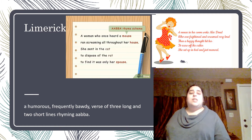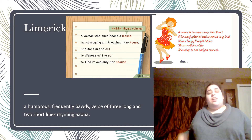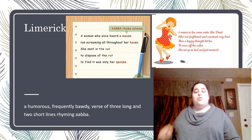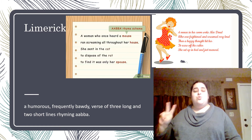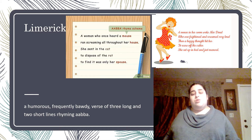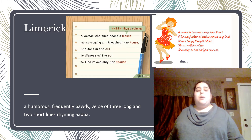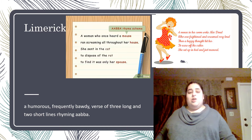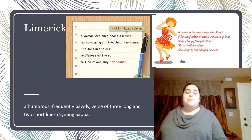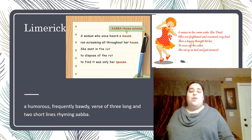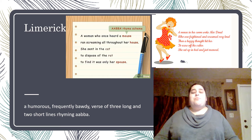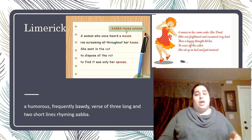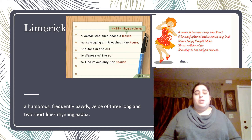The next one is a limerick. This is a hilarious rhythm that has three long and two short rhyme symbols. For example, AABBA. So there I left you guys two examples right there. They're both very funny and they both have those rhymes AABBA.